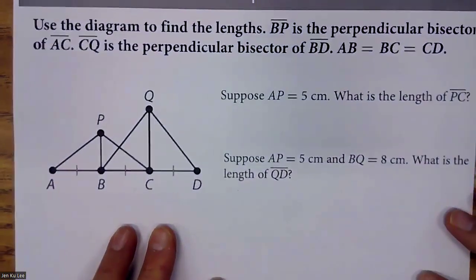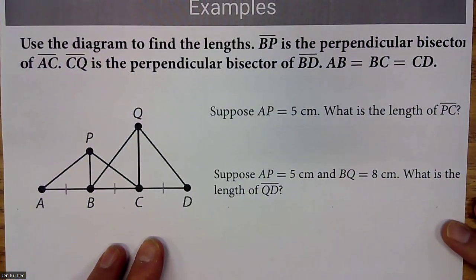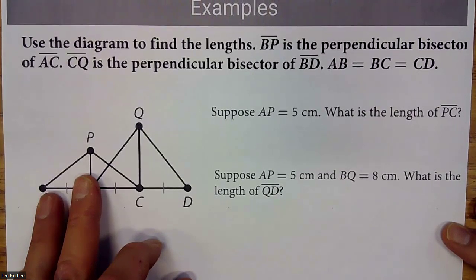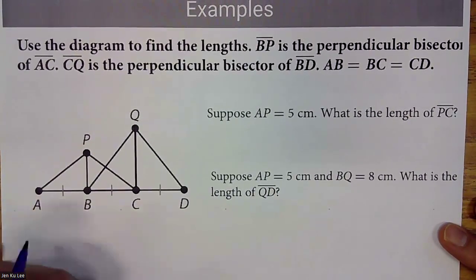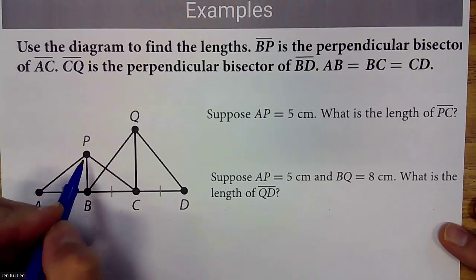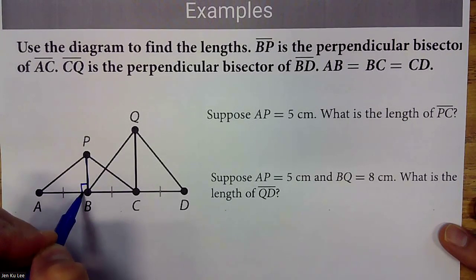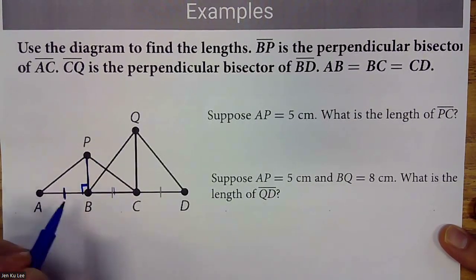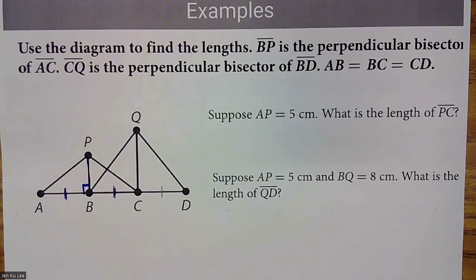Jumping right into an example. Use the diagram to find the length. BP is the perpendicular bisector of AC. So BP is the perpendicular bisector, which means AB is congruent to BC.